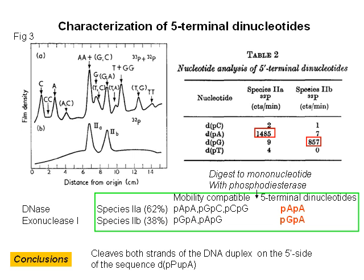Then five-prime terminal dinucleotides were analyzed. Terminally labeled DNA was digested sequentially with DNase and exonuclease I and fractionated by electrophoresis. Figure 3 shows two distinct P32-containing dinucleotide species, 2A and 2B. Upon digestion to mononucleotides, the radioactivity associated with only AMP and GMP, as shown by Table 2, indicating species 2A is AA and species 2B is GA.